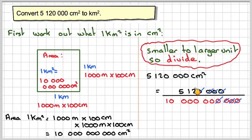So that means I'm going to move the decimal point 1, 2, 3, 4, 5, 6 places. So the final answer will be 0.000512 kilometers squared.